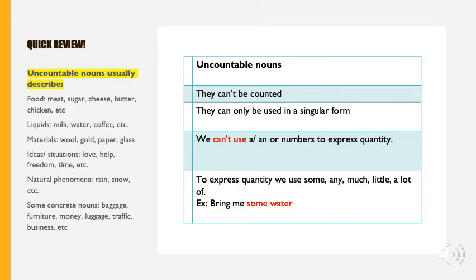So what about uncountable nouns? We use them with objects that cannot be counted. They can only be used in singular form, not plurals, and we cannot use a, an, or any numbers to express quantity. And to do so, we're going to use words like some, any, much, little, a lot of. For example, bring me some water. We do not say bring me one water or bring me two waters. We say some.